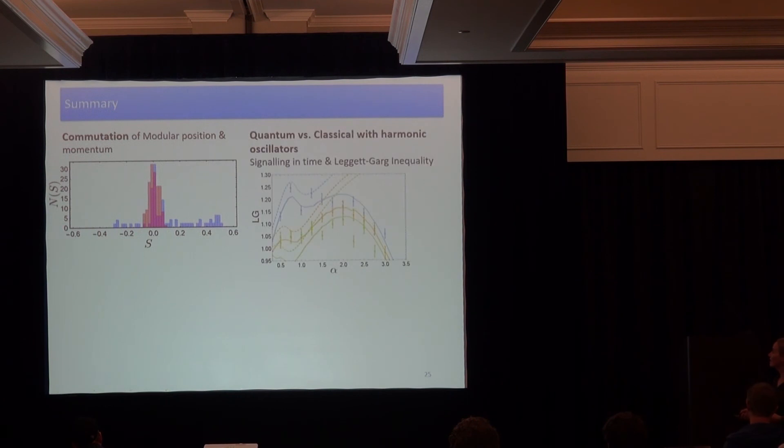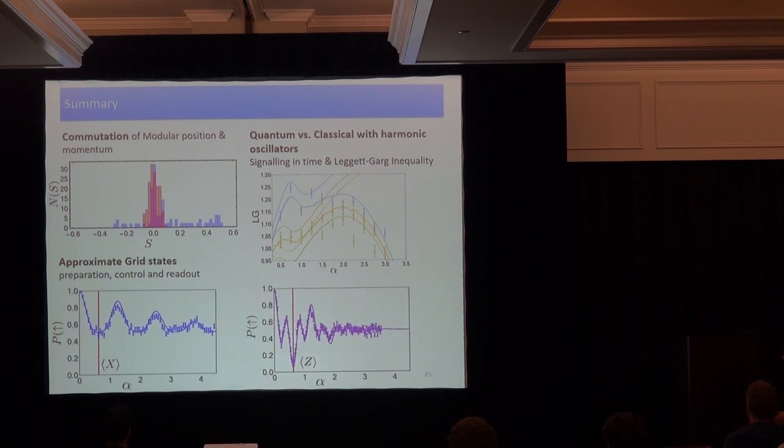So with this, I like to summarize. We have seen how modular position and momentum can commute and how we can find out about it experimentally. We have quickly looked at how we can use these measurements to find out about the quantum to classical transition. And in the end, I showed you how we can create approximate grid states to play with.